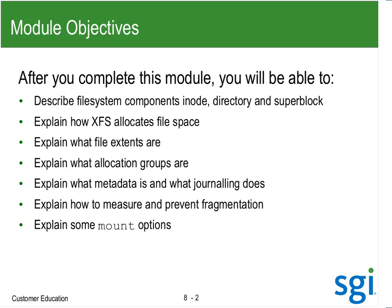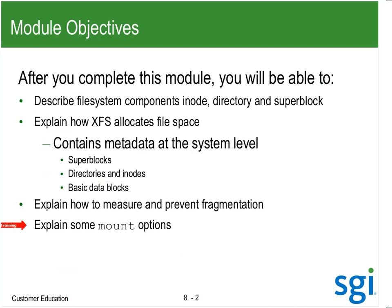I want to go through this quickly, but we want to talk about file system components, allocation space, and explain what an extent is, explain what allocation groups are, explain journaling, talk about fragmentation, and talk about some of the mount options. We are already looking at log buffs, but we can't really increase that anymore.